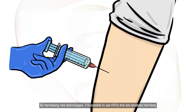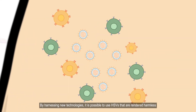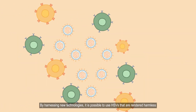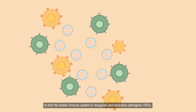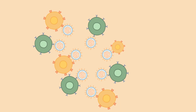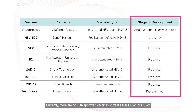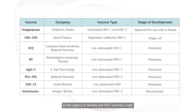By harnessing new technologies, it is possible to use HSVs that are rendered harmless to trick the body's immune system to recognize and neutralize pathogenic HSVs. Currently, there are no FDA-approved vaccines to treat either HSV-1 or HSV-2, so the urgency to develop anti-HSV vaccines is high.